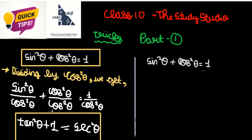So we got tan square theta plus 1 is equal to sec square theta. This identity is equal to cos square theta.